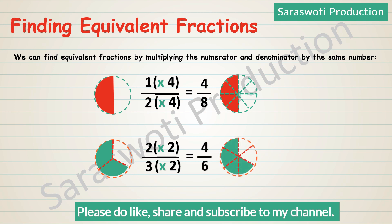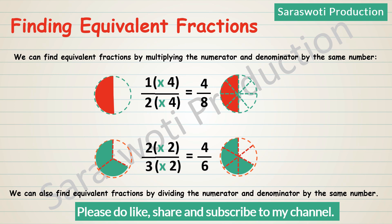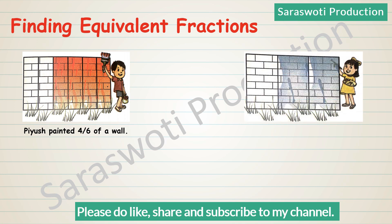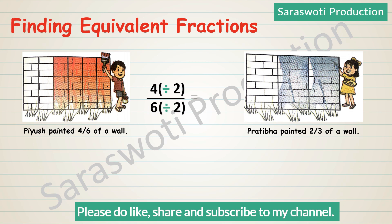We can also find equivalent fractions by dividing the numerator and denominator by the same number. For example, PS painted 4/6 of a wall and Prativa painted 2/3 of another wall. Take PS's fraction 4/6 and divide both numerator and denominator by a common factor other than one. 4/6: 4÷2 over 6÷2 equals 2/3. Both PS and Prativa painted the same amount.